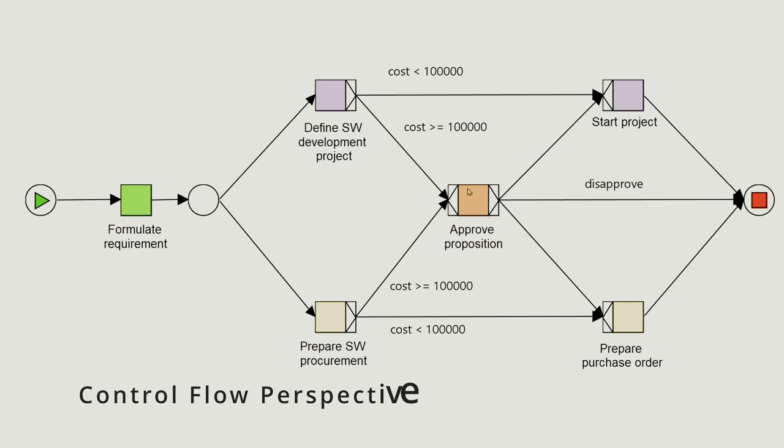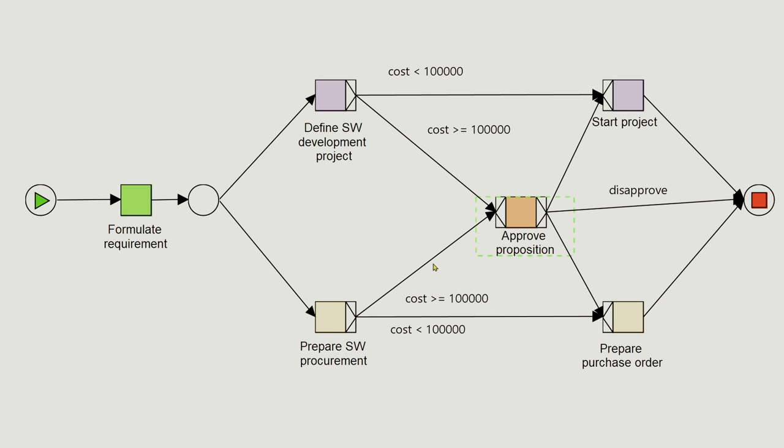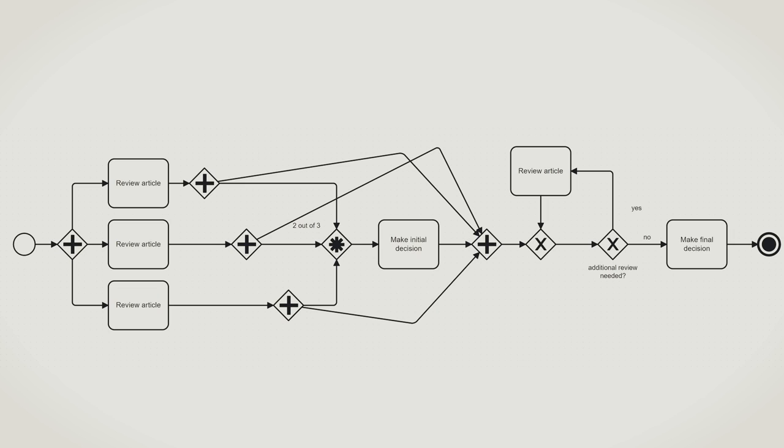The control flow perspective is about the question of which tasks occur in which order in the business process. It is what is normally depicted in a graphical diagram in business process management or workflow management systems. There has been another approach to unifying workflow management systems called BPMN, which is a notational standard for business processes, and it covers almost all of the workflow patterns in the control flow perspective.